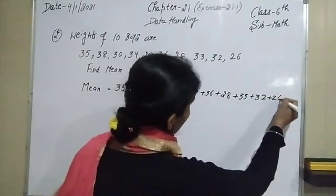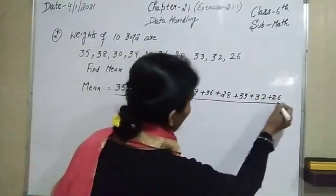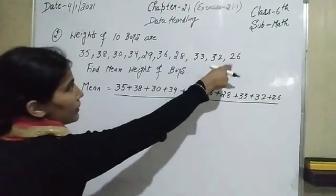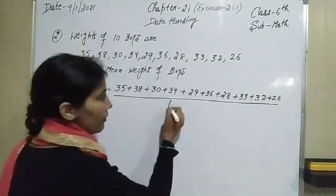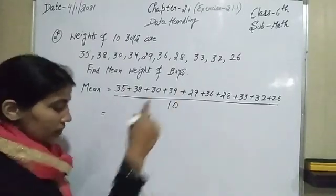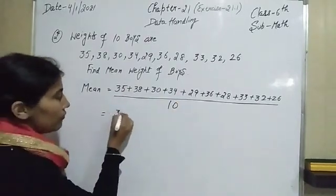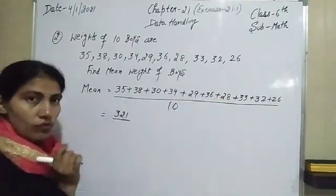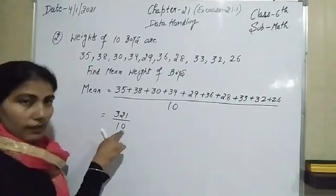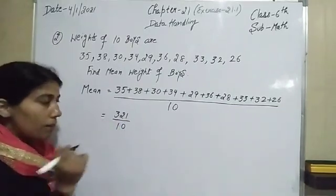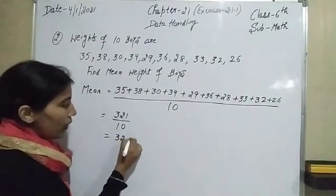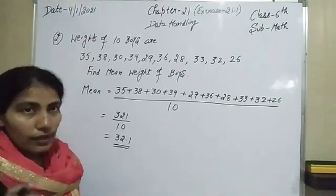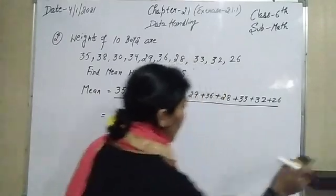We count the observations: 1, 2, 3, 4, 5, 6, 7, 8, 9, 10 — so these are 10 observations, divided by 10. When you add all these numbers you will get 321, divided by 10. We put the decimal after one place, so the answer is 32.1. That is the mean weight of the boys — the required answer is 32.1.